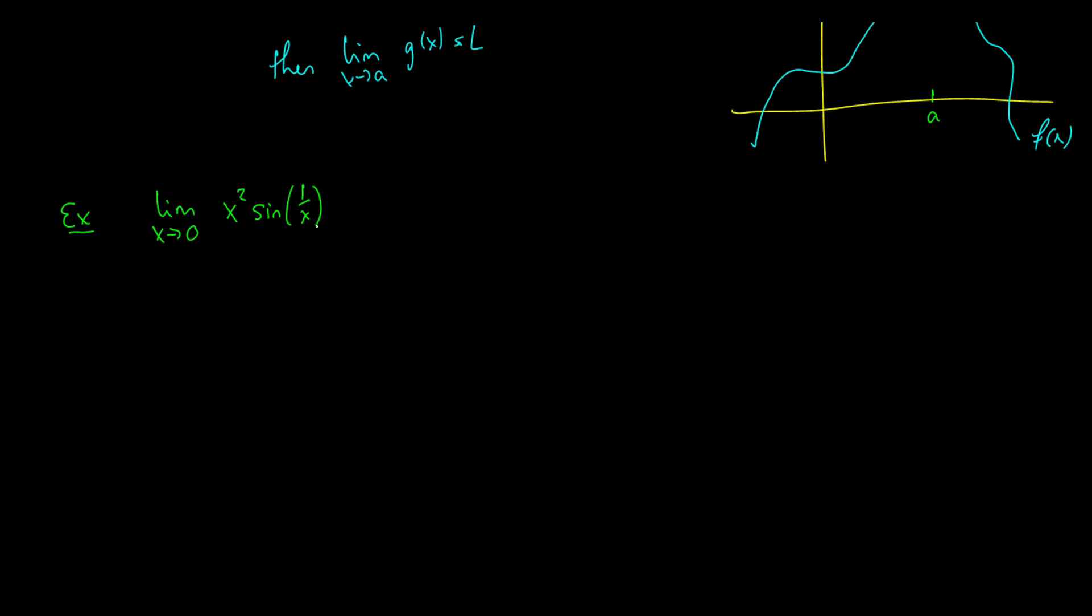So, we're going to find the limit as x goes to 0 of x squared times sine of 1 over x. Okay, so you plug x equals 0, you get 0 times sine of 1 over infinity. Actually, you get sine of 1 over 0, which you can't do. So, you can't plug this into there, because then if you try to make it bigger or smaller, you get sine of infinity and sine of negative infinity, and what does that mean? We have no idea. So, we can't do anything with that.